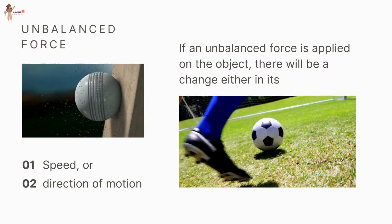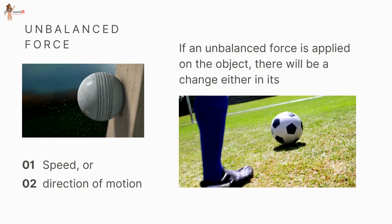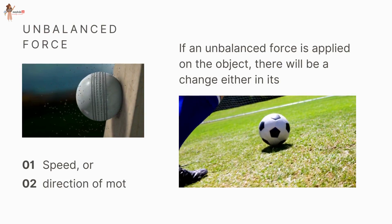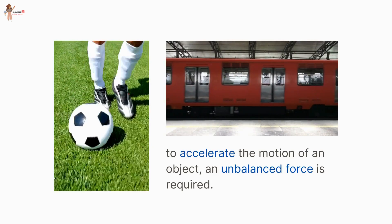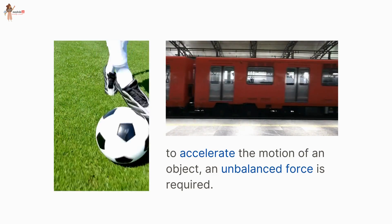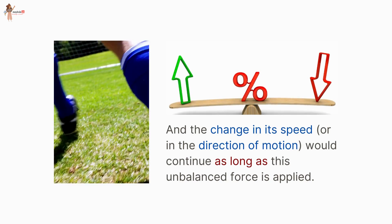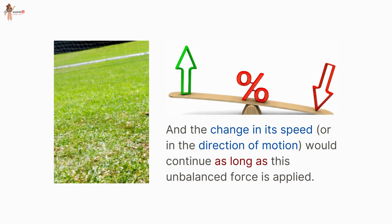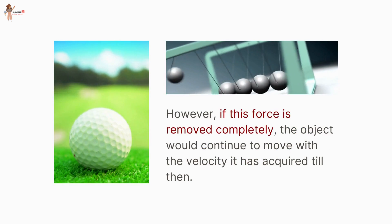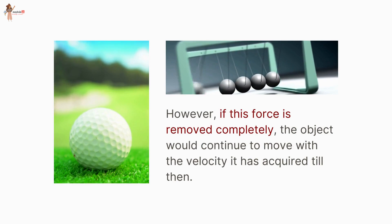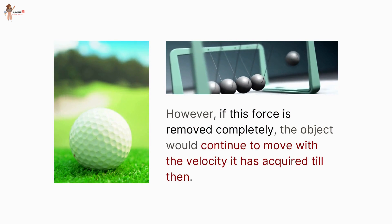If an unbalanced force is applied on the object, there will be a change either in its speed or in the direction of its motion. Thus, to accelerate the motion of an object, an unbalanced force is required. The change in speed or direction of motion will continue as long as this unbalanced force is applied. However, if this force is removed completely, the object would continue to move with the velocity it has acquired till then.